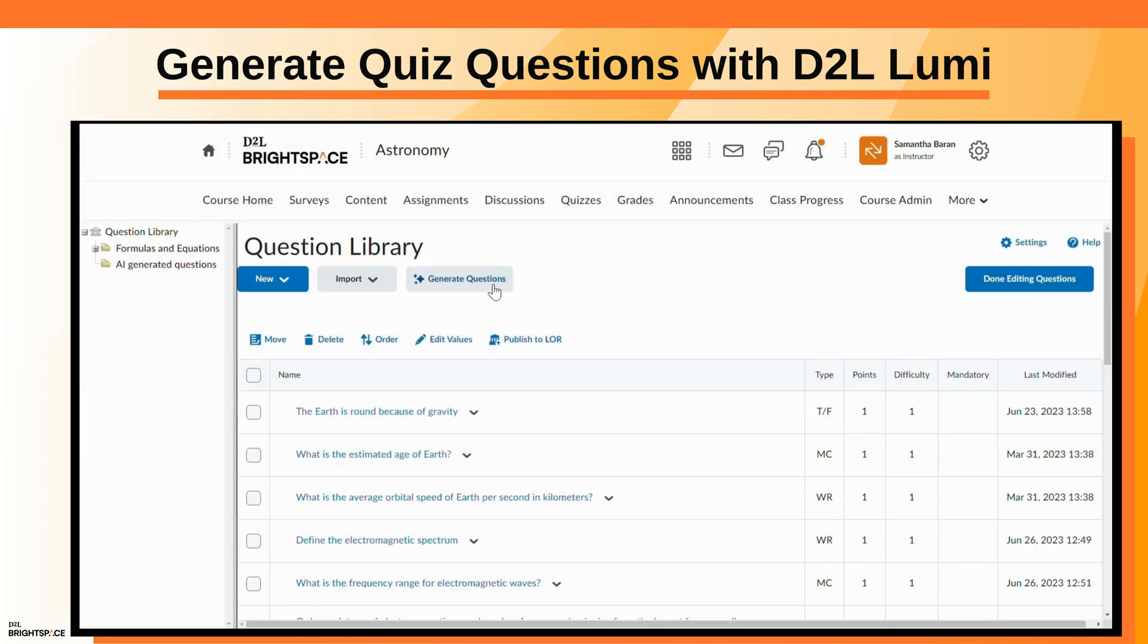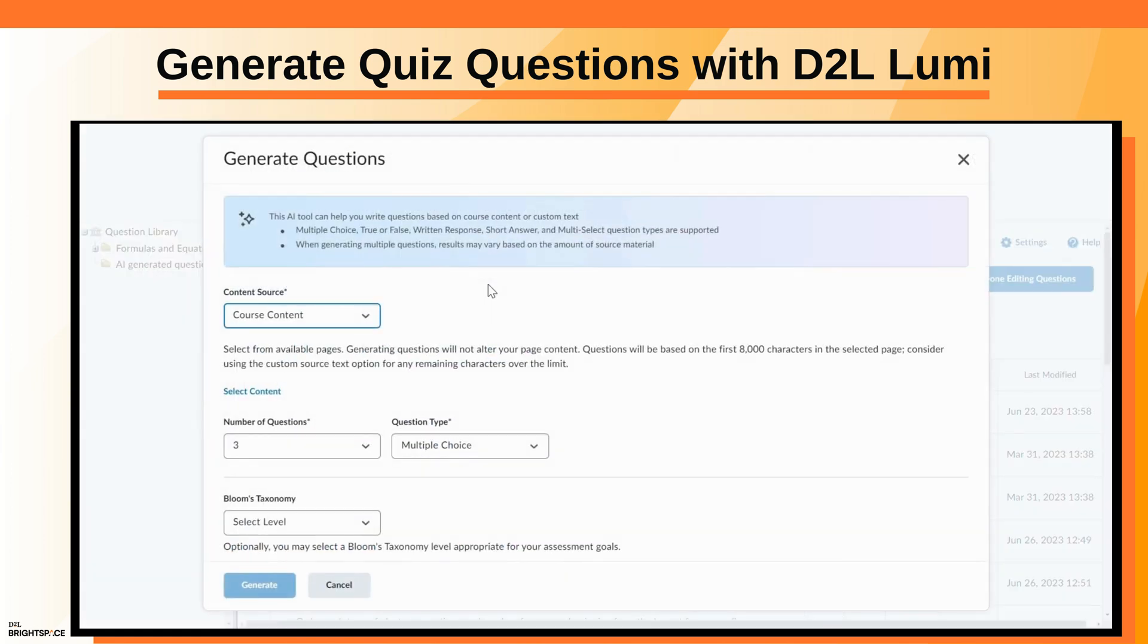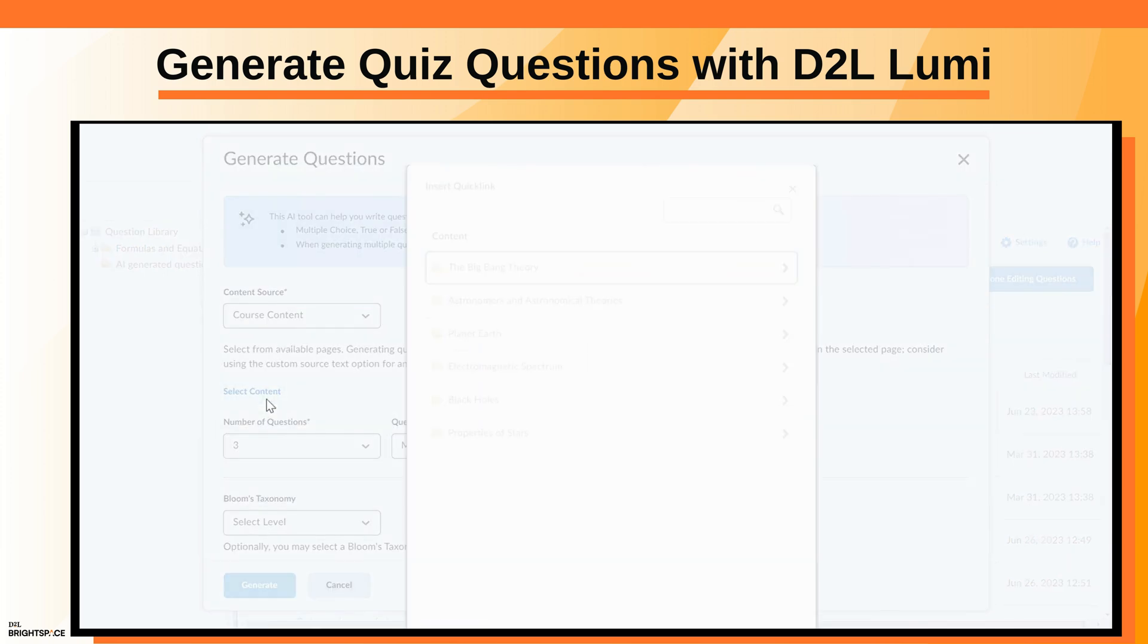In the Question Library tab, click Generate Questions. In the Content Source drop-down, choose Course Content and click Select Content to choose which content topics to use as the question source.